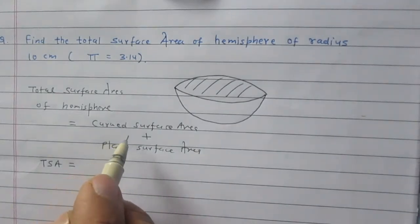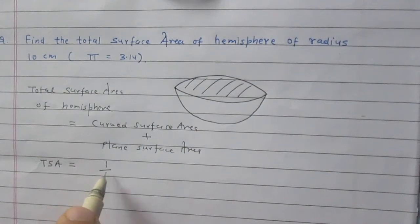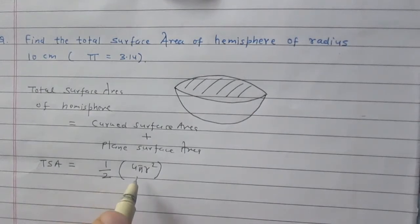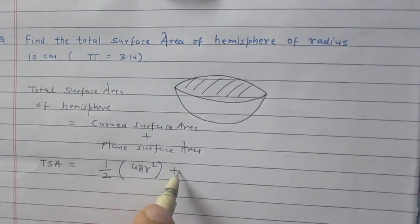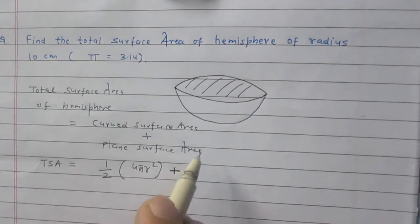Curved surface area of a hemisphere is just half of the curved surface area of a sphere. So it is half of 4πr². And plane surface area, the plane surface is a circle.